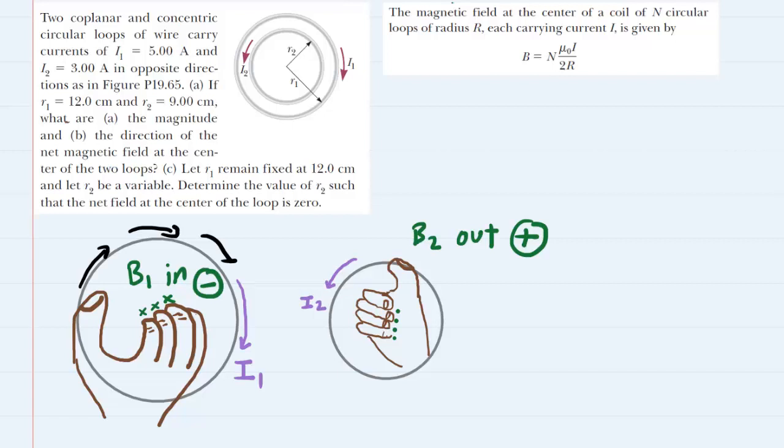With those ideas in mind we next want to calculate the magnitude of each magnetic field using this equation. We take the number of loops within the circular wire, multiply it by a constant and the current, and then divide by 2r. Now r is the radius of the loop. For both loops there's only one loop within each wire, so n equals 1 for each. We can disregard this n in this particular case.